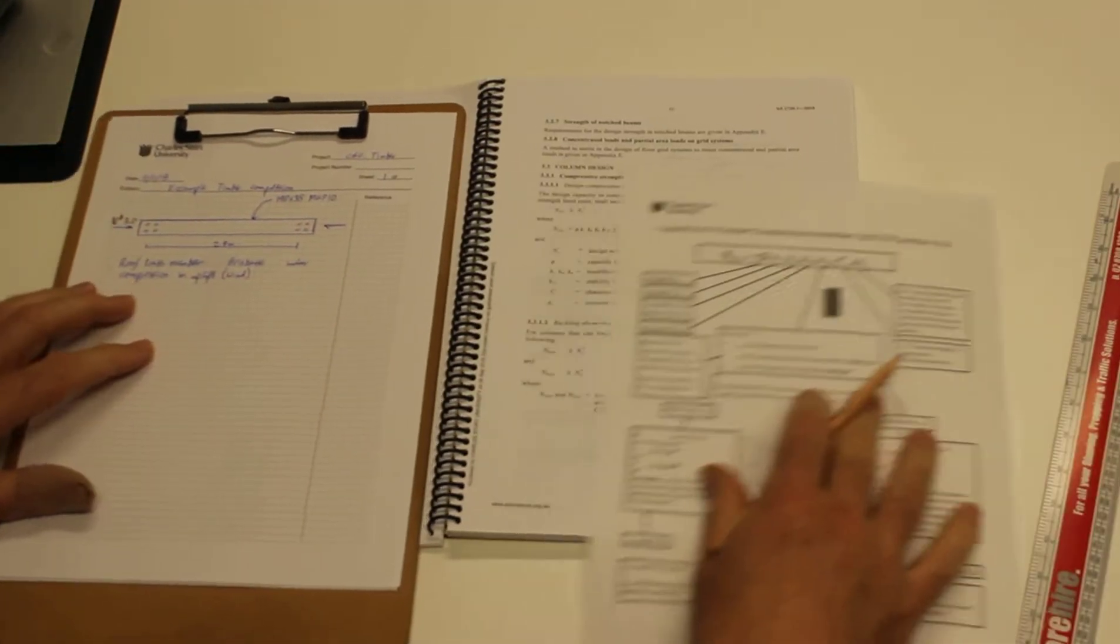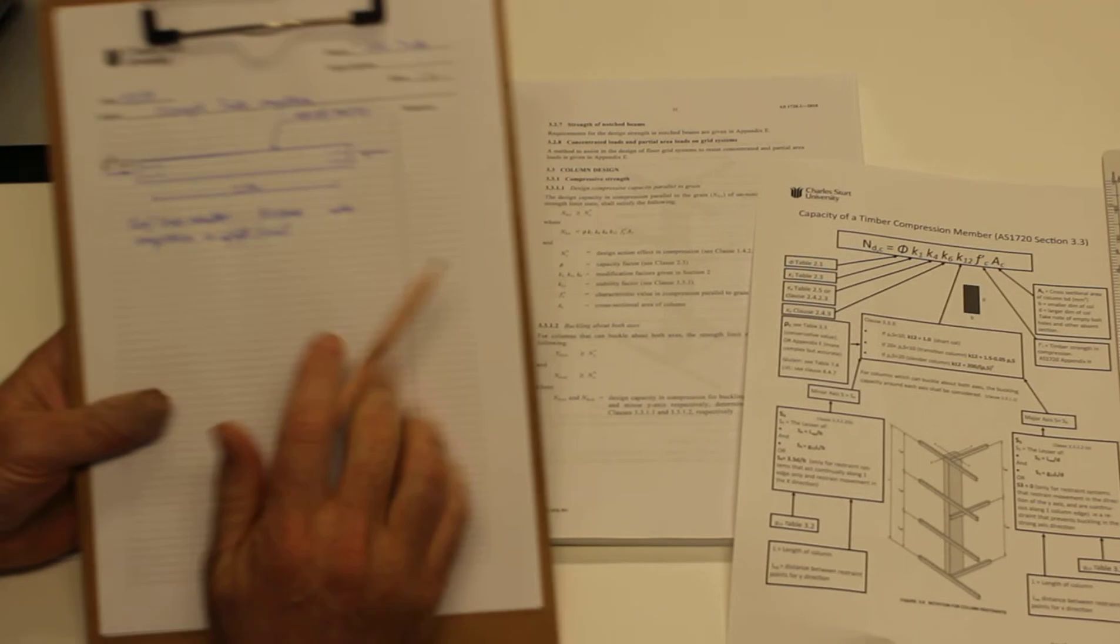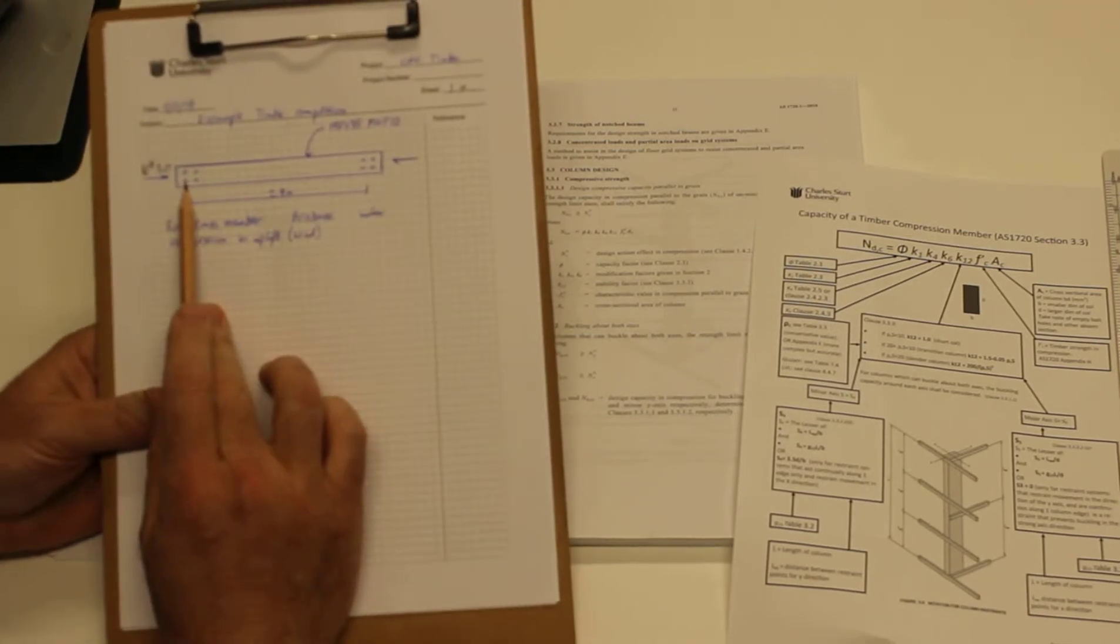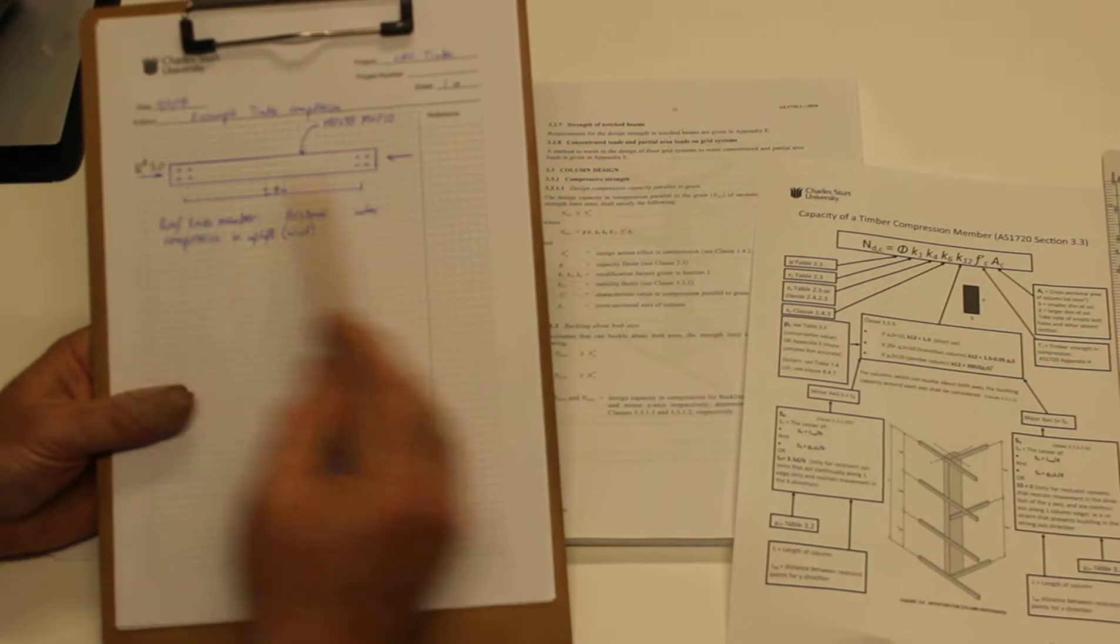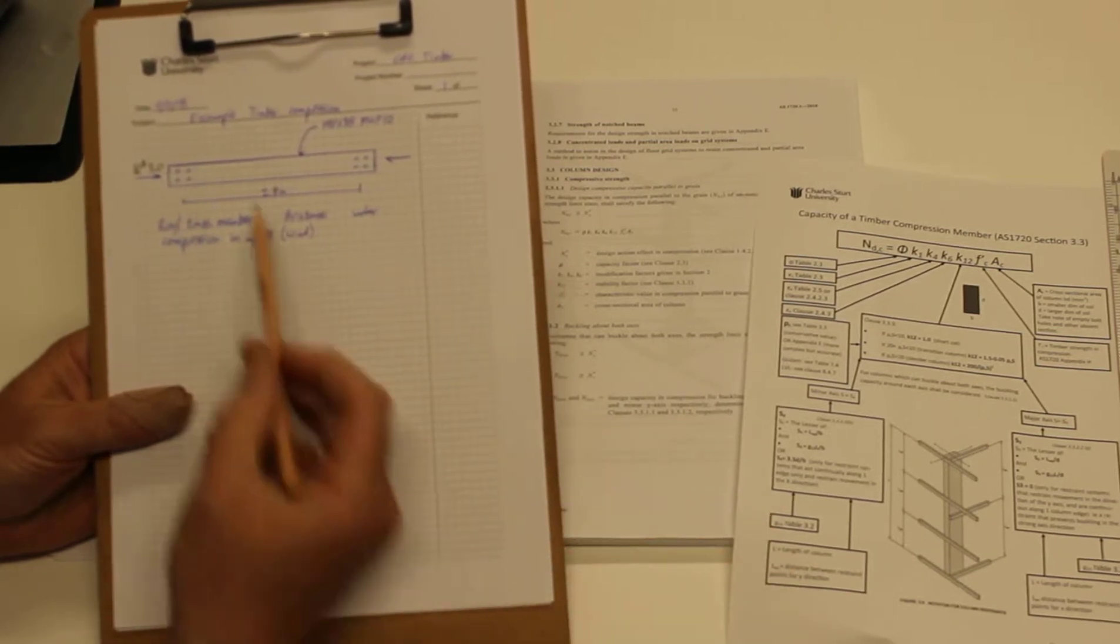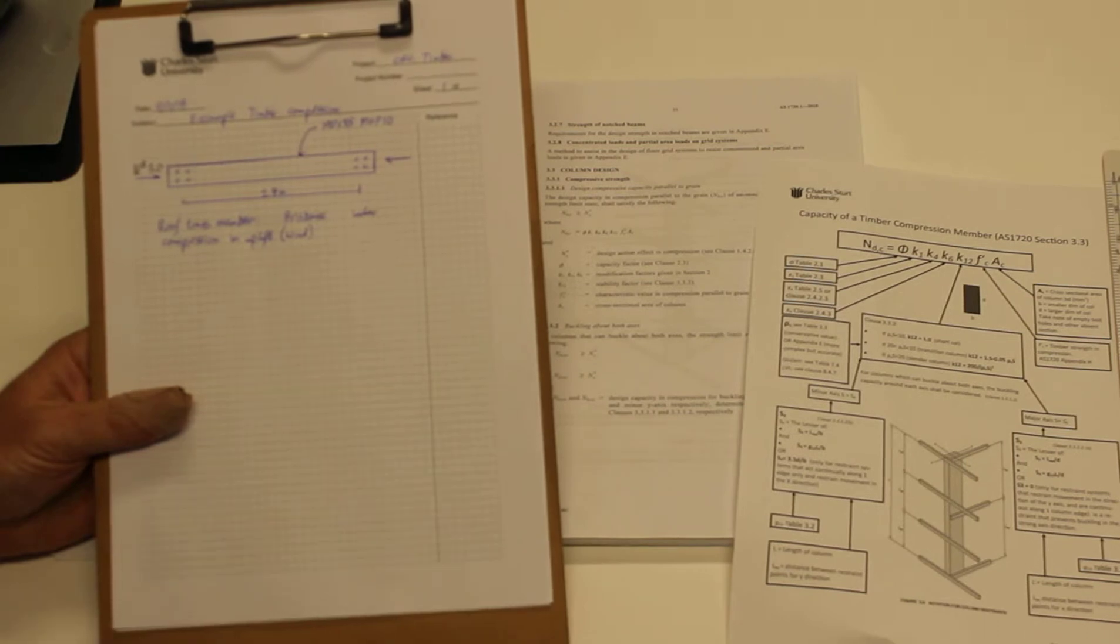I've also got my summary sheet with me. So we're going to design a member of a timber truss. It's in a roof truss, and in this particular example it goes into compression when there is wind uplift on the roof.